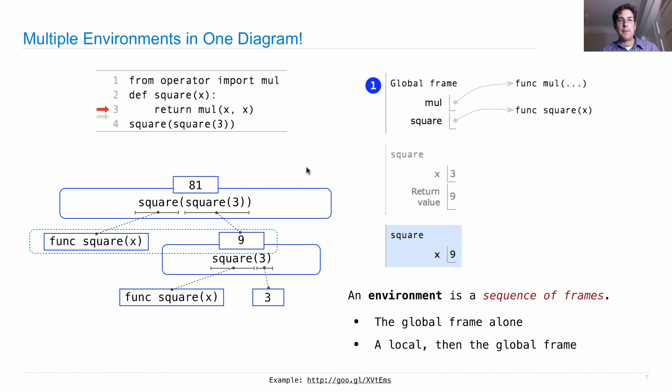Then there are two different environments, each for one of the calls to the square function. Here's one of them. It's the square frame in which x was bound to 3 as the first frame in that environment. The second frame is the global environment. So this is an instance of a local frame followed by the global frame. And this is the environment in which we evaluated mul(x, x) the first time. And the second time we evaluated mul(x, x), it was in a different environment, which started with this local frame, where x is bound to 9, and then was followed by the global frame. So notice that all environments end in the global frame. Everyone has access to it, hence the name global.